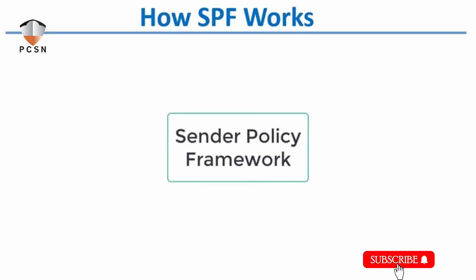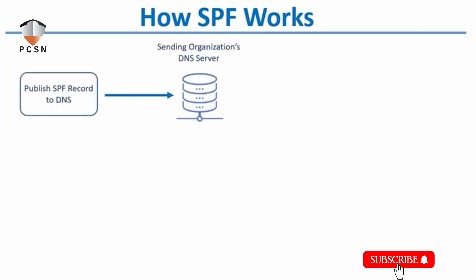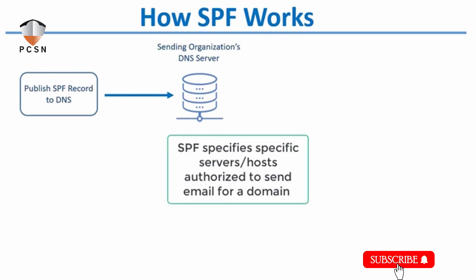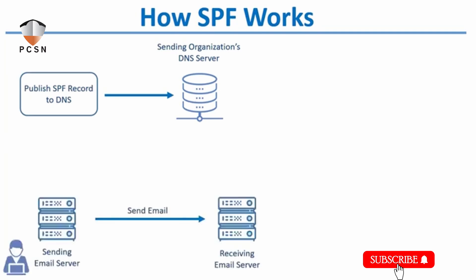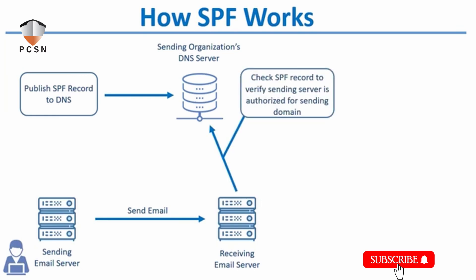First, let's talk about SPF, which stands for Sender Policy Framework. From a high level, SPF is a mechanism that tells receiving email servers what servers are allowed to send mail on behalf of your domain. It uses an SPF record published in DNS to do that. When you set up SPF, you publish your SPF record to the sending organization's DNS server, and then when an email is sent out from your domain, the receiving server performs an SPF record lookup by querying DNS for the SPF record of the sending domain to verify whether it came from an authorized sending server or IP address.